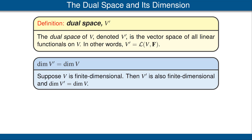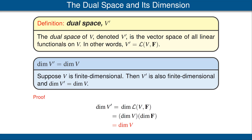Now we have an important theorem: suppose V is finite dimensional, then the dual space V′ is also finite dimensional and has the same dimension as V. For the proof: V′ equals L(V, F), so the dimension of V′ equals the dimension of L(V, F). We proved previously that this dimension equals the dimension of V times the dimension of the second vector space. Here the second vector space is F, the scalar field, which has dimension 1. So we get the desired result, as shown here.